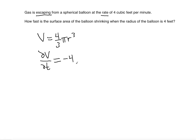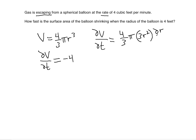Now, how do we write dV/dt with respect to variable r and constants? We're going to use the product rule and differentiation. We keep the constants — 4 over 3 and pi — and then differentiate r to the third using the power rule to get 3r squared. Don't forget we also need dr/dt, because the radius also changes as time progresses. If the balloon is getting smaller, the volume decreases and the radius decreases too, so dr/dt must be included.